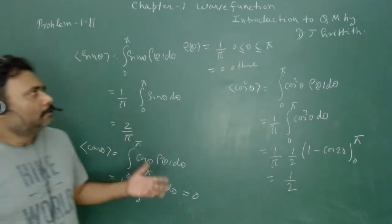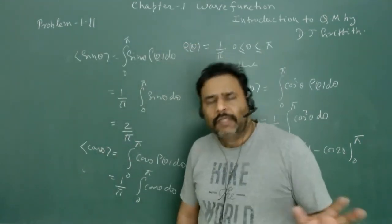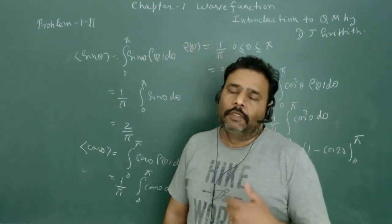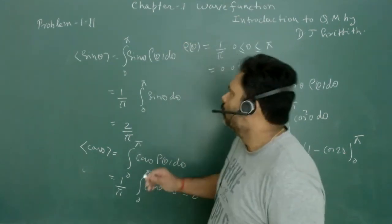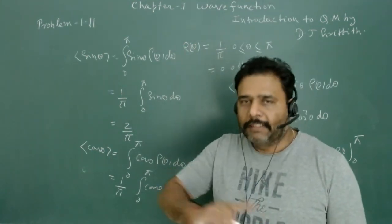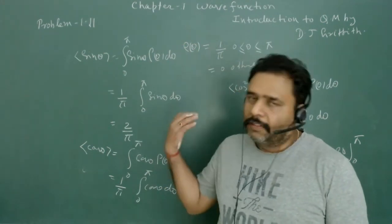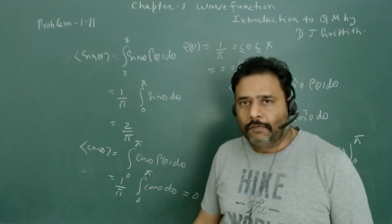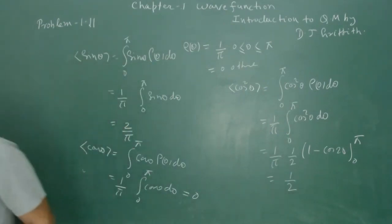So if we have a distribution function or probability density, we can easily find the average value of any function of the random variable. This problem is a beautiful example of a continuous random variable. You can try this problem yourself, and you are free to give suggestions. Thank you.